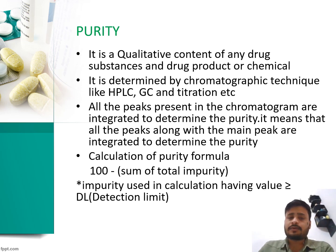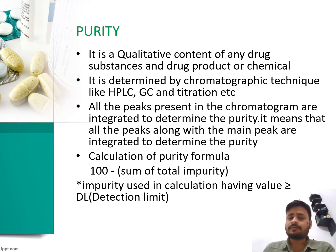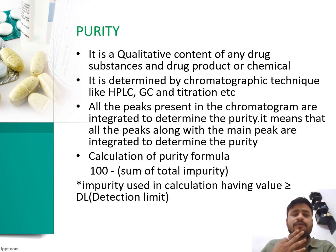How do you calculate purity? The formula is: Purity = 100 minus the sum of total impurities. Impurities used in the calculation must have a value greater than or equal to the DL (detection limit) value. Values below this limit are disregarded. This DL value is obtained through validation.